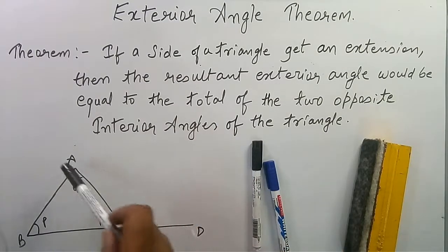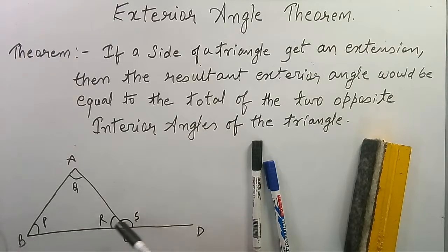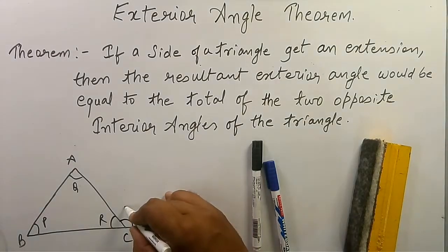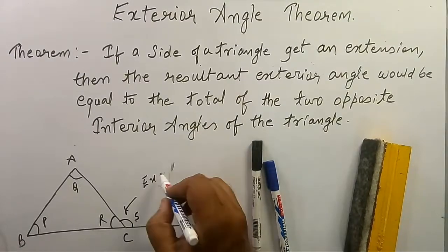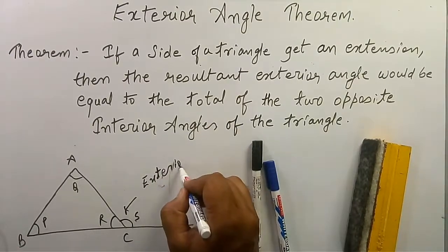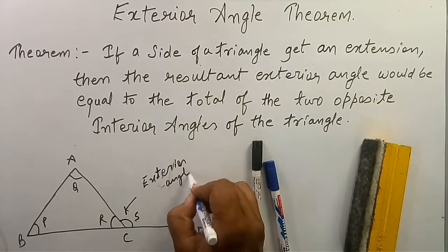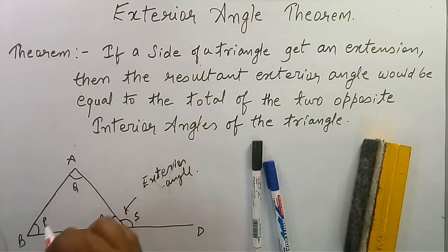Suppose this is triangle ABC and side BC is extended to D. This angle of line CD with CA is known as the exterior angle. And P and Q, these are the pair of opposite interior angles.